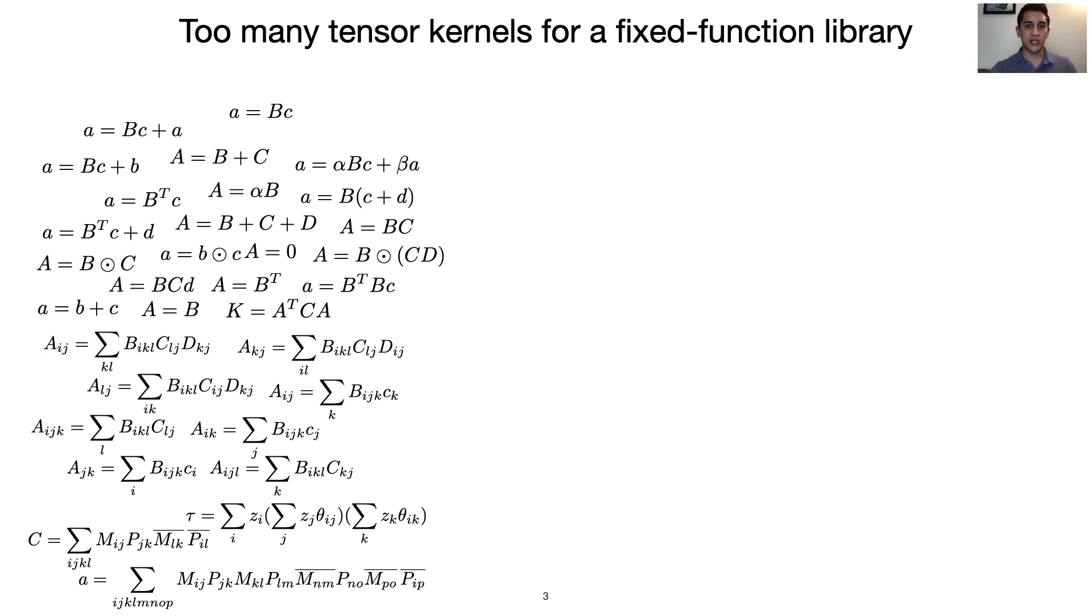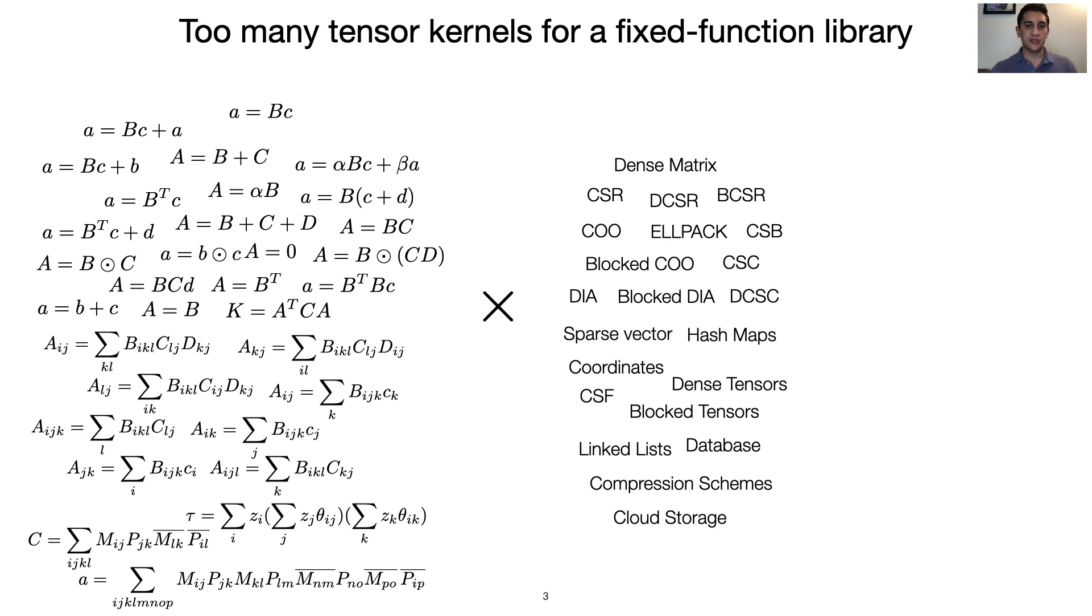Even with a small sample of important sparse tensor algebra kernels, it becomes clear that while it is possible to write any of these kernels, you can't write them all. This is especially true when considering the combinatorial explosion of common sparse tensor storage formats and the machines that these codes may execute on.